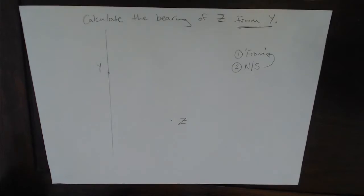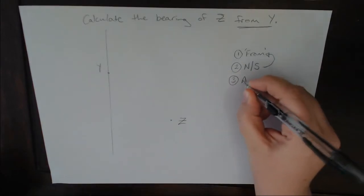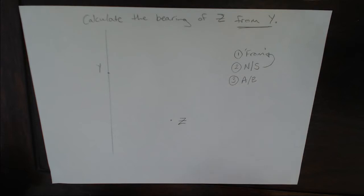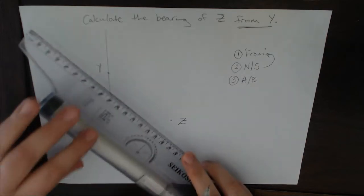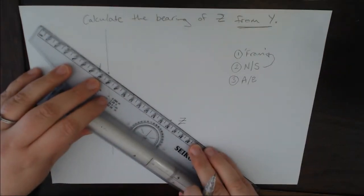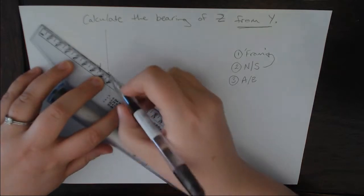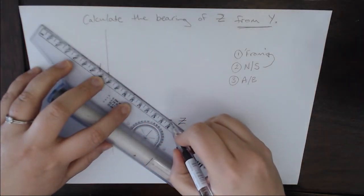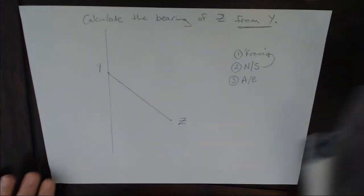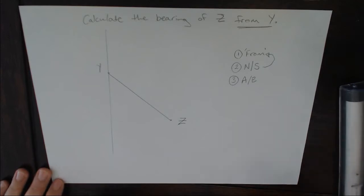Third step is I draw an A-B line. Now I always refer to it as an A-B line because it could be a trig beacon, it could be a lighthouse, it could be the letter Y or the letter Z.